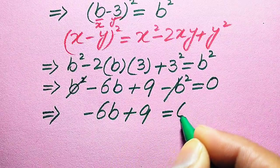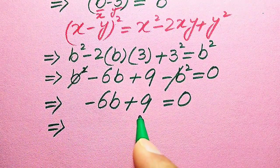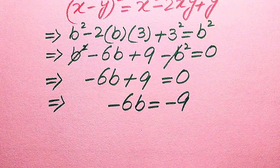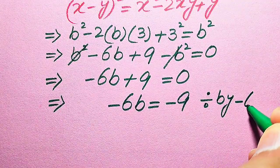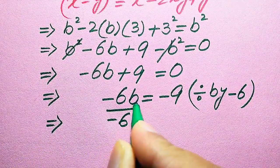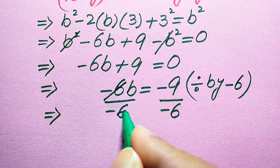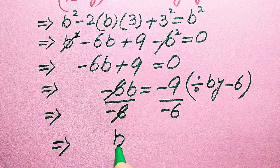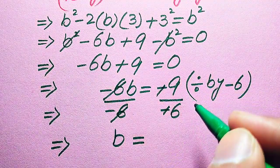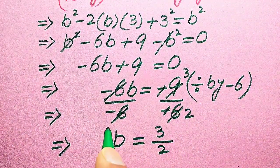Our target is to find the values of b, so we move all other terms to the right-hand side. Moving +9 gives −6b = −9. Dividing both sides by −6: −6b ÷ (−6) = −9 ÷ (−6). The −6 cancels, and the negatives cancel. Simplifying using the 3 times table: 3×2 = 6, 3×3 = 9, so b = 3/2.